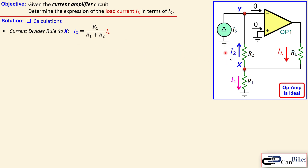To find I2, I look at the two branches: since there are two branches splitting from this current, I say I2 equals R1 over (R1 + R2), times the current splitting into this branch — because that is the current producing these two currents. That is the expression using the current divider rule.